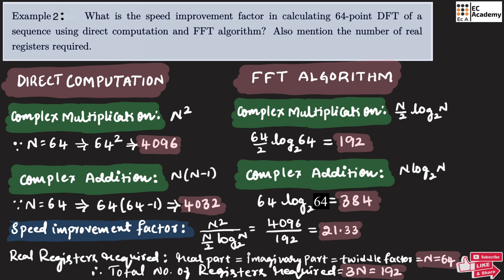From these examples, we understood that the direct DFT method requires thousands of multiplications, additions, and trigonometric equations, but the fast Fourier transform requires drastically reduced computations, making it much faster and more efficient. That is why FFT is the backbone of modern signal processing applications like image processing, audio compression, and communication systems. This concludes our discussion on problems comparing DFT versus fast Fourier transform. Hope you have understood the topic. Thank you.